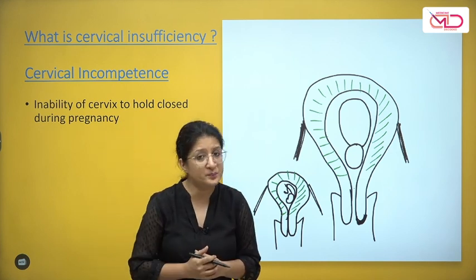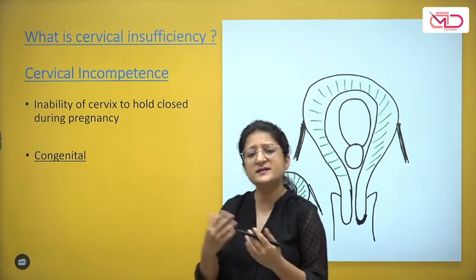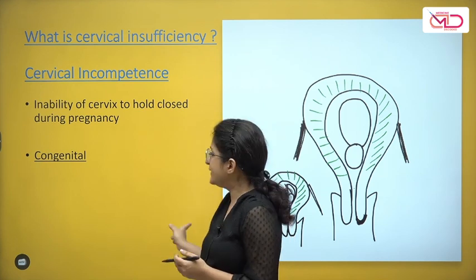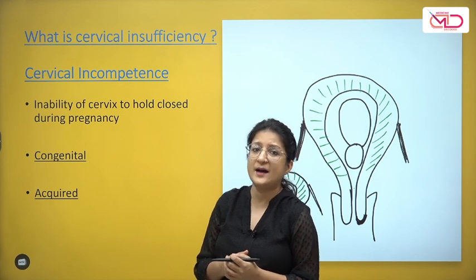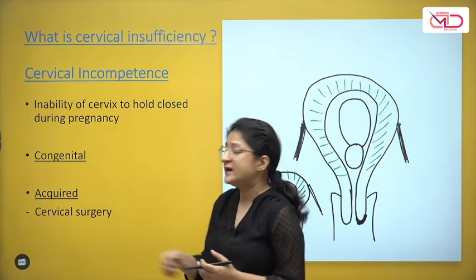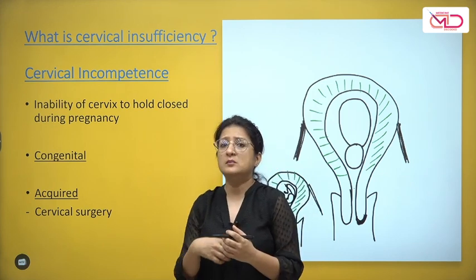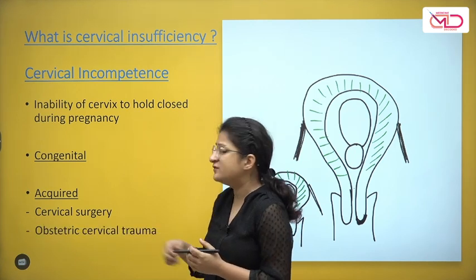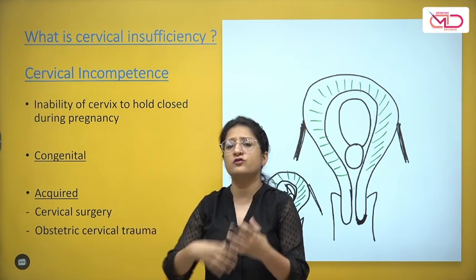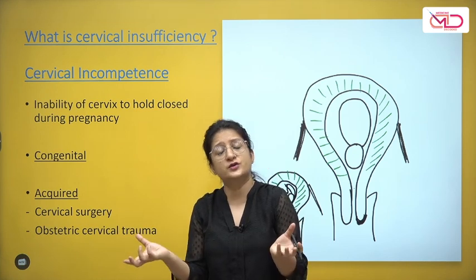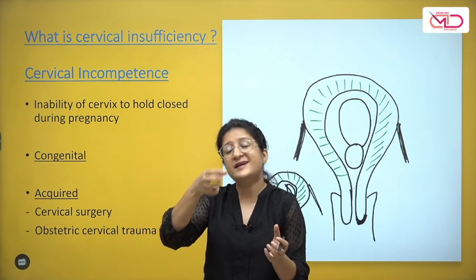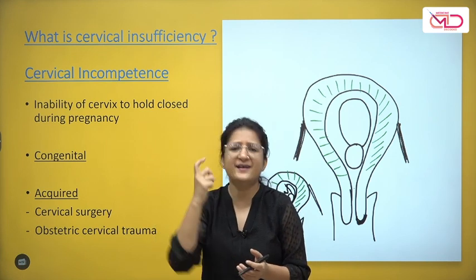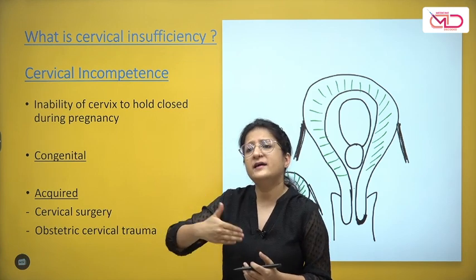The causes can be congenital — an inherent weakness of the cervical tissues — or acquired. Acquired causes include cervical trauma, such as multiple forceful dilatations and curettages, obstetric cervical trauma, or cervical surgeries like conization done for CIN, where a cone of cervical tissue is removed. This compromises the length and integrity of the cervix, potentially contributing to cervical incompetence in subsequent pregnancies.